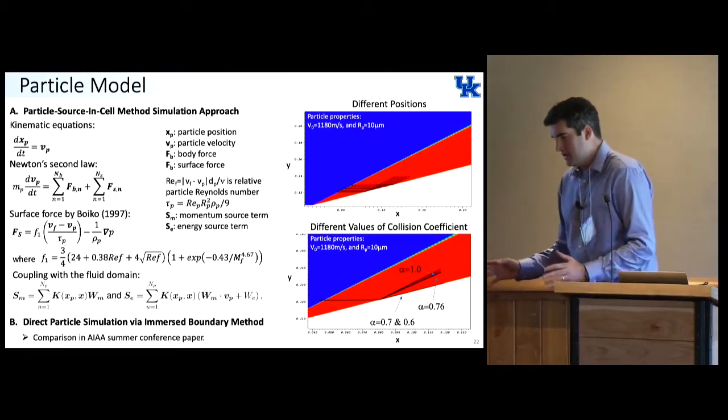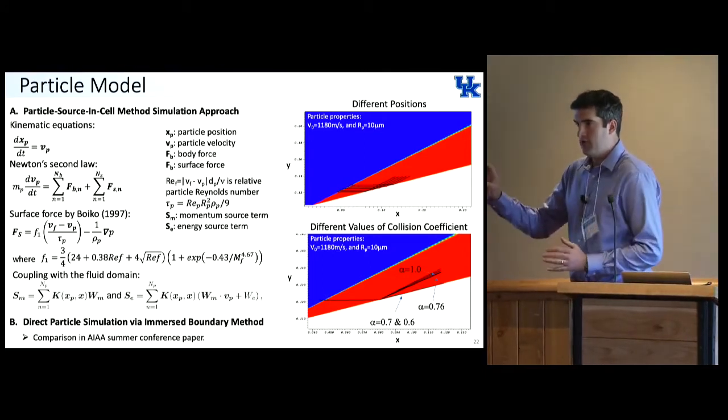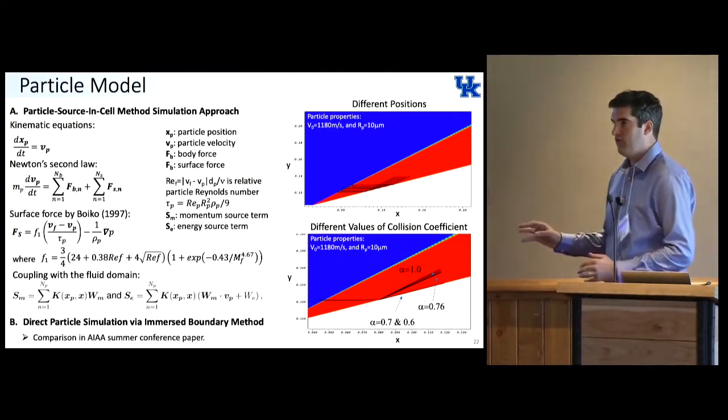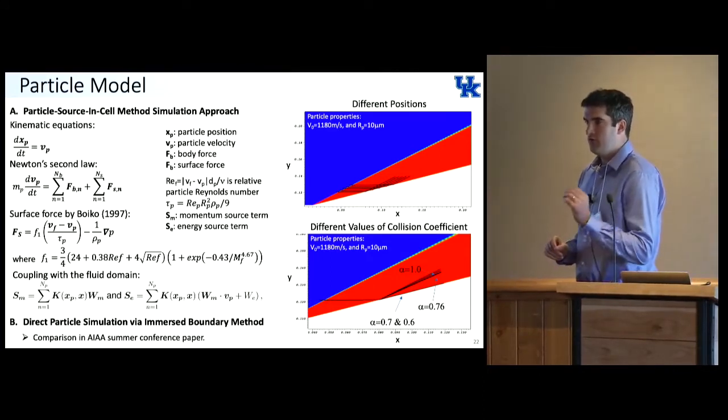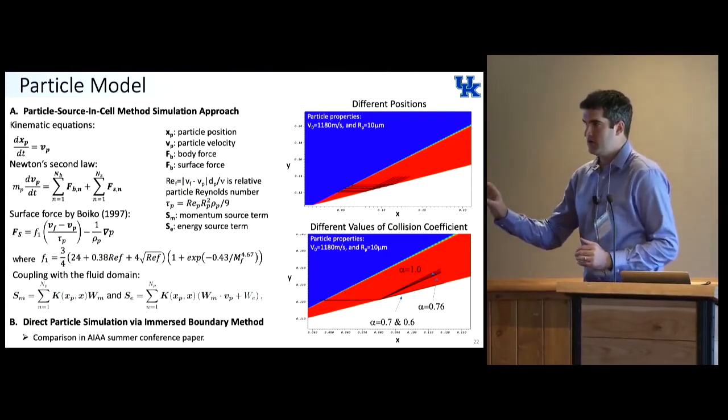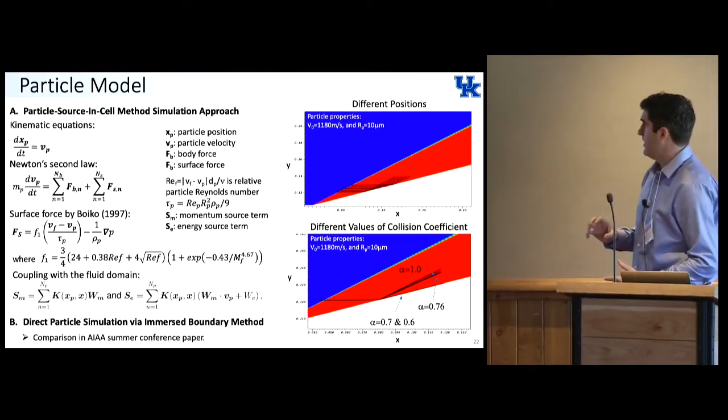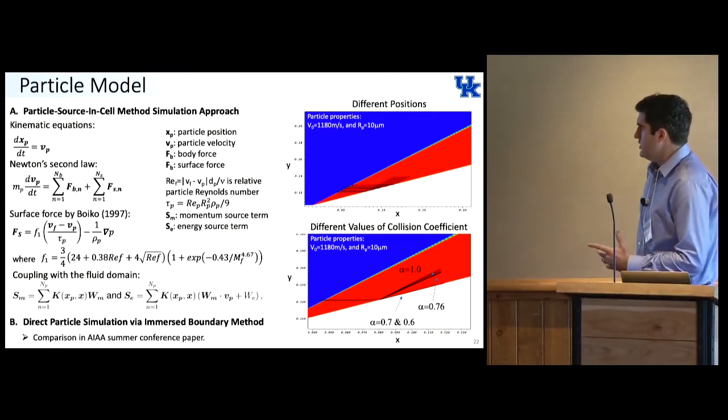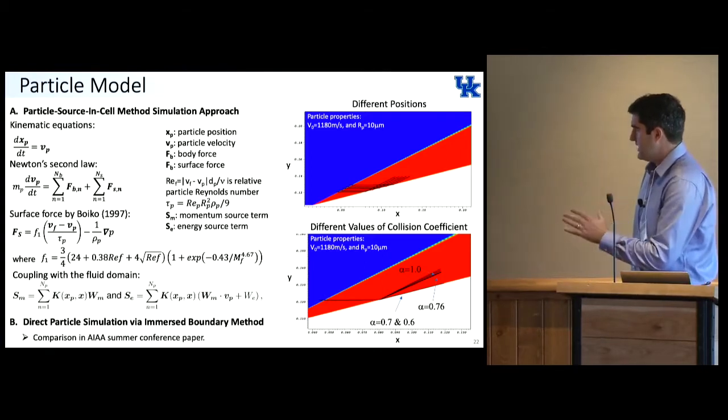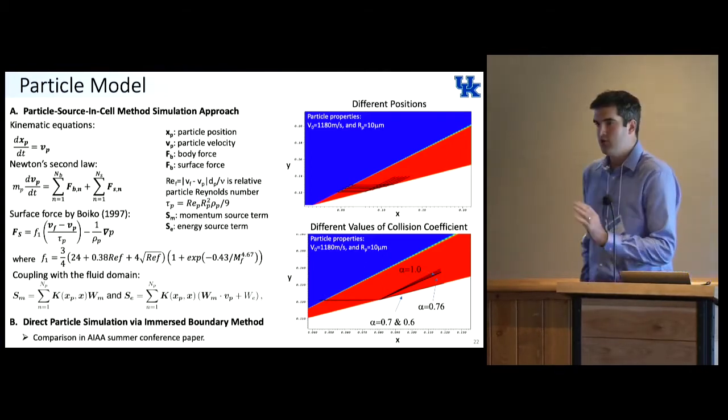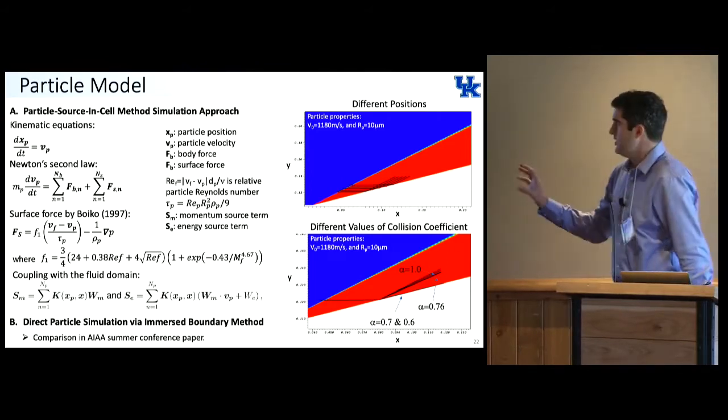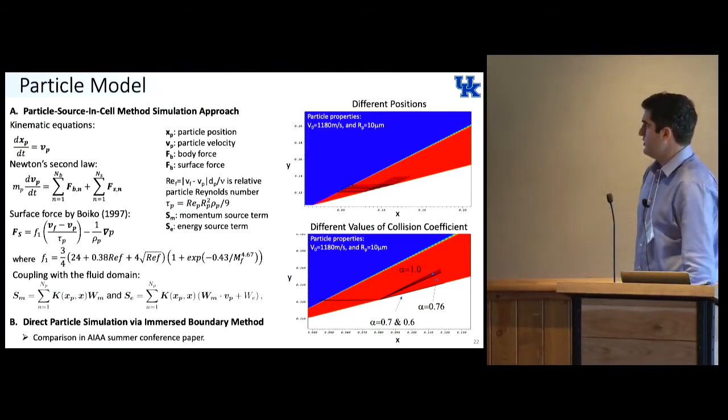That was the method and now we couple into it the particle. The animation I showed you before, the disturbance was introduced in the flow with wall forcing. Now we want to model the disturbance being introduced by a particle. To allow us to validate the method and compare with other authors, the first step is we model the particle with a source term. We don't actually have a physical particle in the flow, we just model it with a source term.